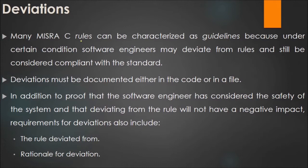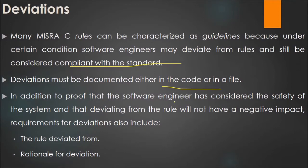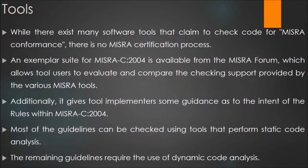Many MISRA-C rules can be characterized as guidelines because, under certain conditions, software engineers may deviate from rules and still be considered compliant with the standard. The deviation must be documented either in the code or in a file, and must prove that the software engineer has considered the safety of the system and that deviating will not have a negative impact. Requirements for deviation also include a deviation form and the rationale for the deviation.